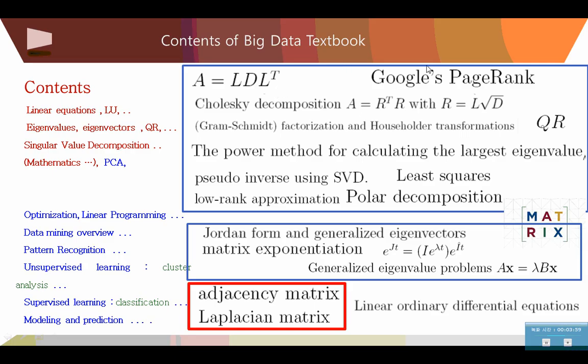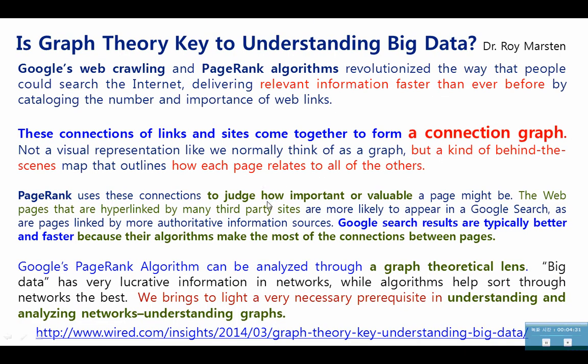So far, as I mentioned, we have covered matrix factorizations and Jordan canonical forms and matrix functions. Now, we will cover the adjacency matrix and Laplacian matrix here. Then, we will really go through this part, which is a core of the big data and data mining and machine learning. Here, Dr. Roy Marson, in this reference, asked this question: Is graph theory key to understanding big data?